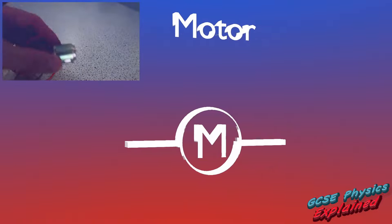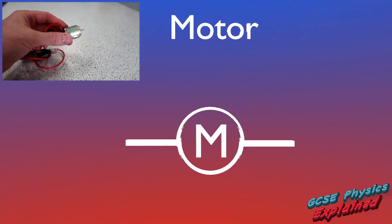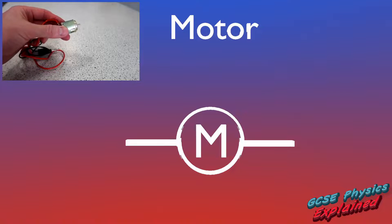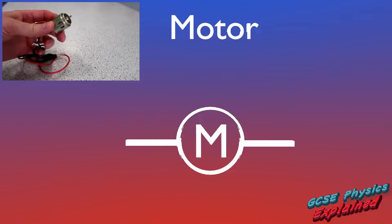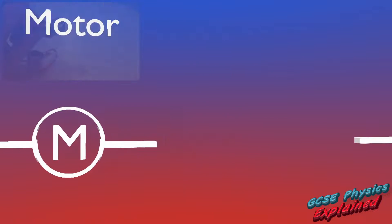Motors convert electrical energy into kinetic energy. The symbol is just a circle with an M in the middle.